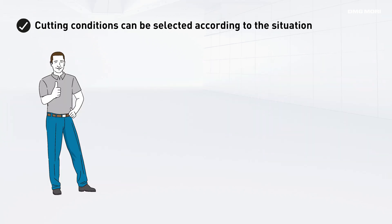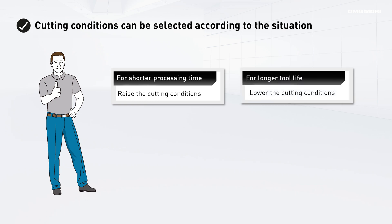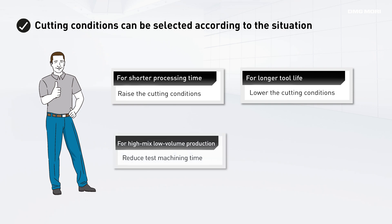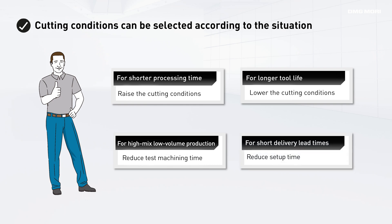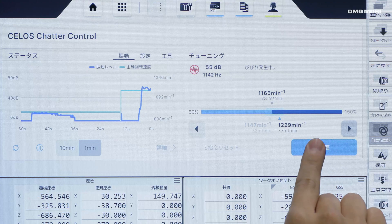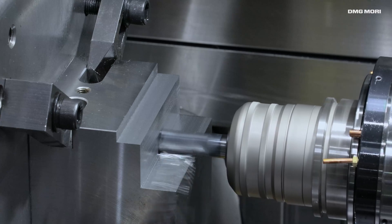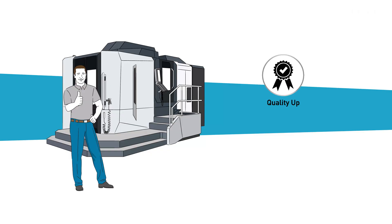With Celos Chatter Control, operators can select cutting conditions according to the situation. They can raise cutting conditions to shorten processing time or lower cutting conditions to extend tool life. Furthermore, it is possible to reduce test machining time in high-mix, low-volume production and setup time for products with short delivery lead times. Celos Chatter Control is designed as an easy-to-use solution that allows operators to quickly integrate stable machining conditions, reducing workload and significantly benefiting the quality and efficiency of your production.